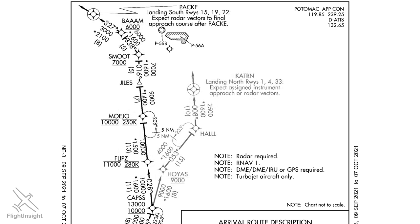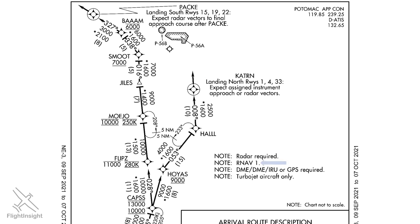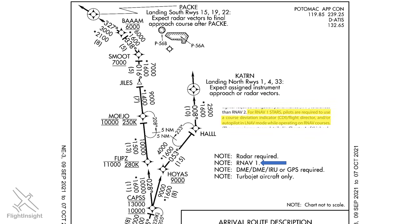Many STARs will split off routes based on the direction the airport is operating in. ATC — most likely the center controller — will typically give advance information about this so we can plan the full arrival. The PAC and Catron fixes are flyover waypoints, while the other fixes are fly-by waypoints. This STAR requires aircraft equipped with RNAV with accuracy up to 1 nautical mile, which an IFR GPS would meet. Another note mentions this STAR is restricted to turbojet aircraft only, so unless you're moving on to the big iron, you won't be flying the CAPS-3 arrival.